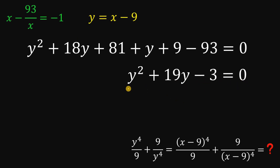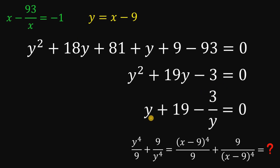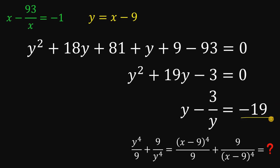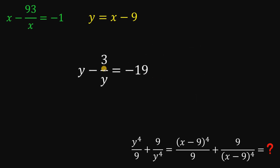From here, we divide all terms by y, giving us y plus 19 minus 3 over y equals zero. Subtracting 19 from both sides, we get y minus 3 over y equals negative 19.